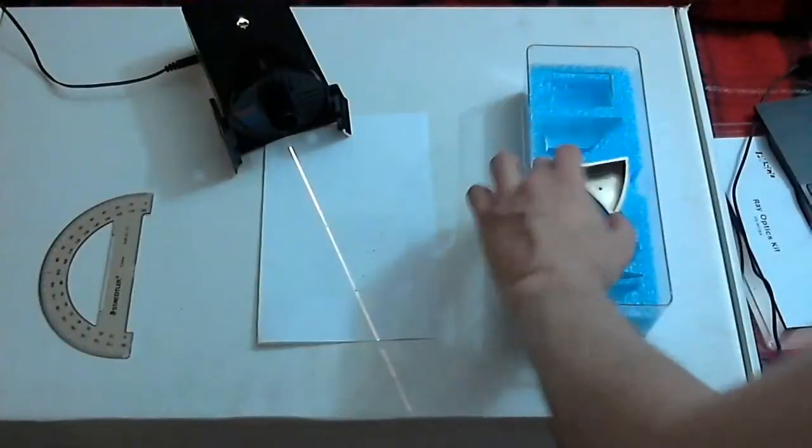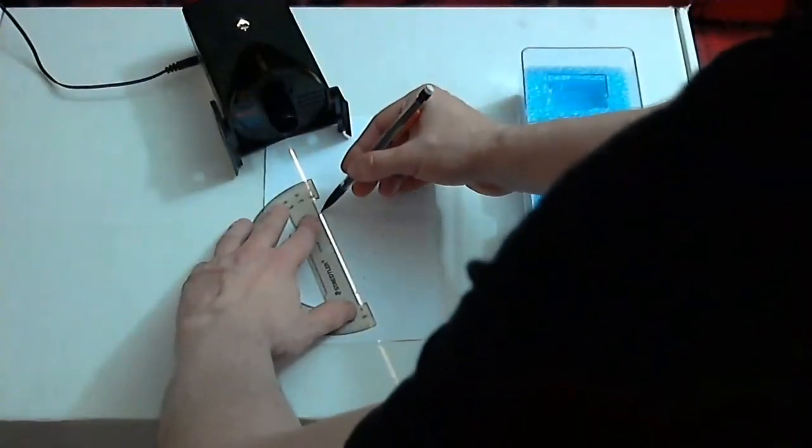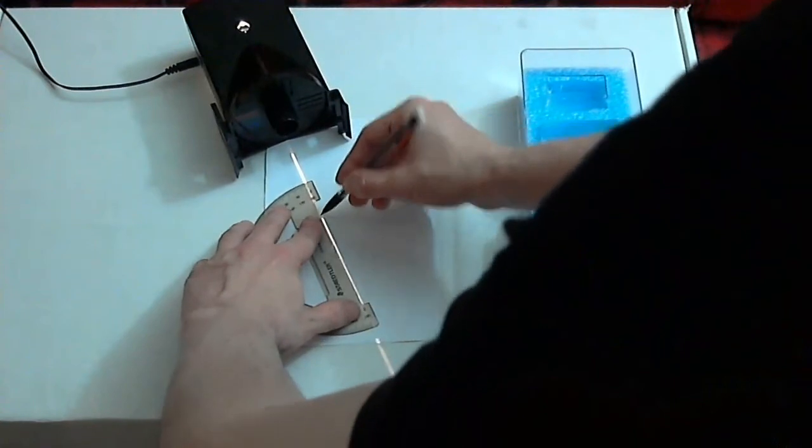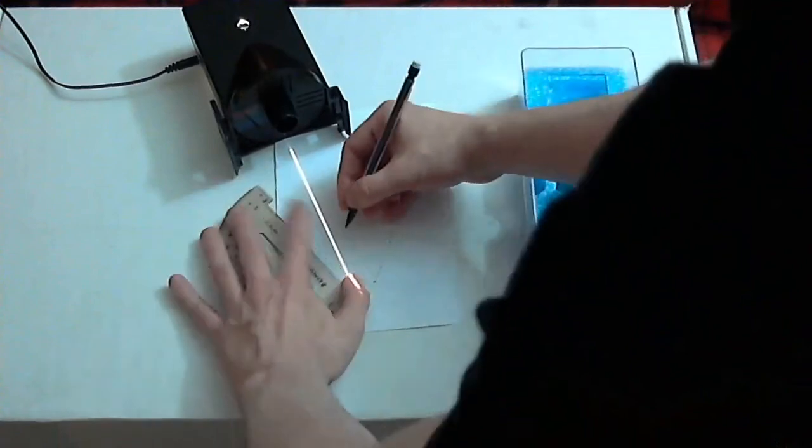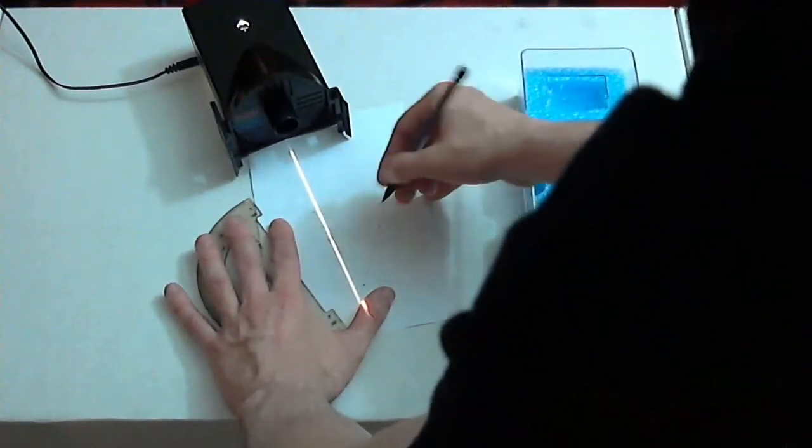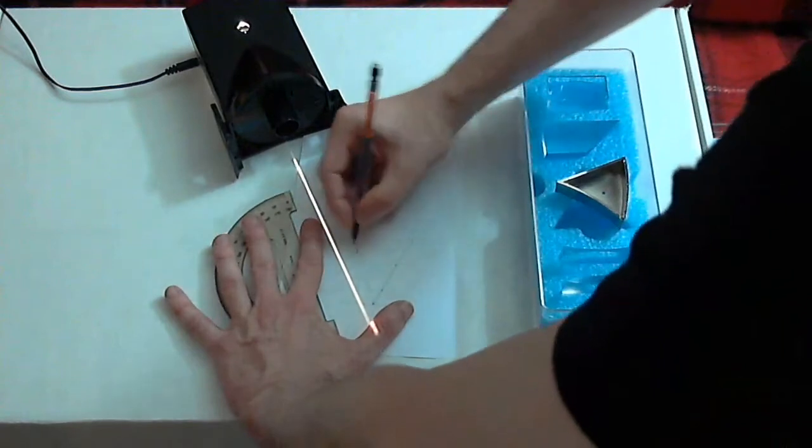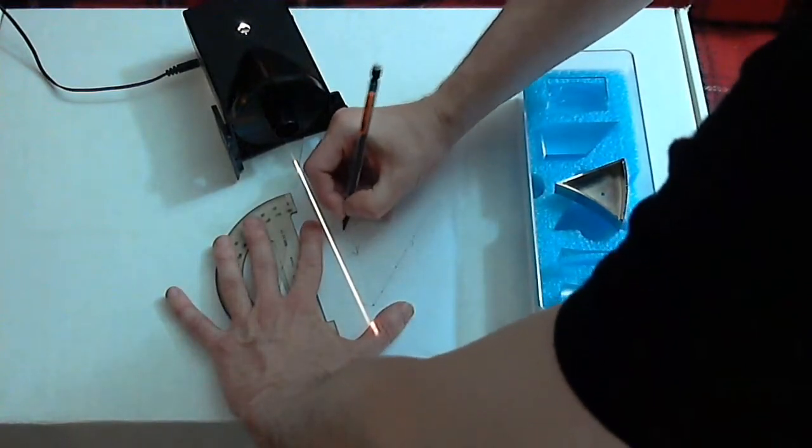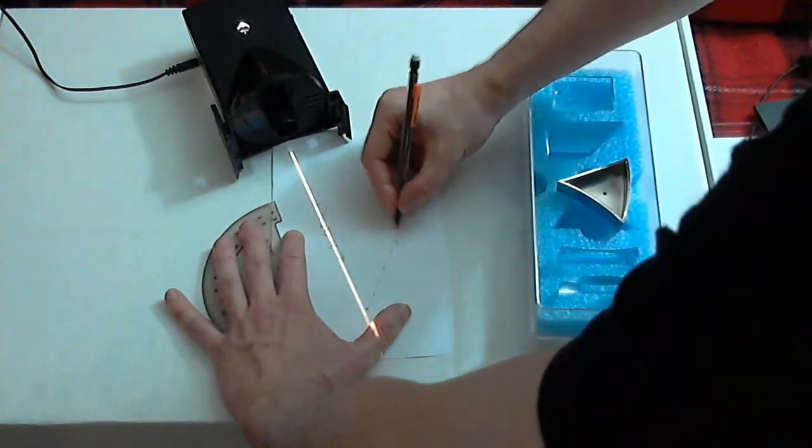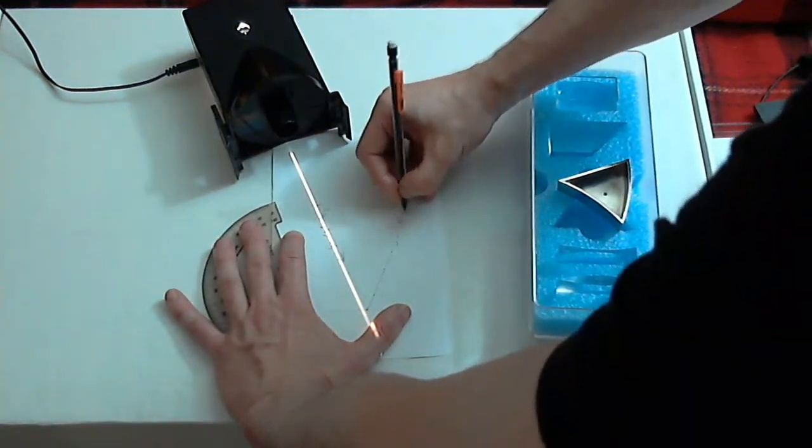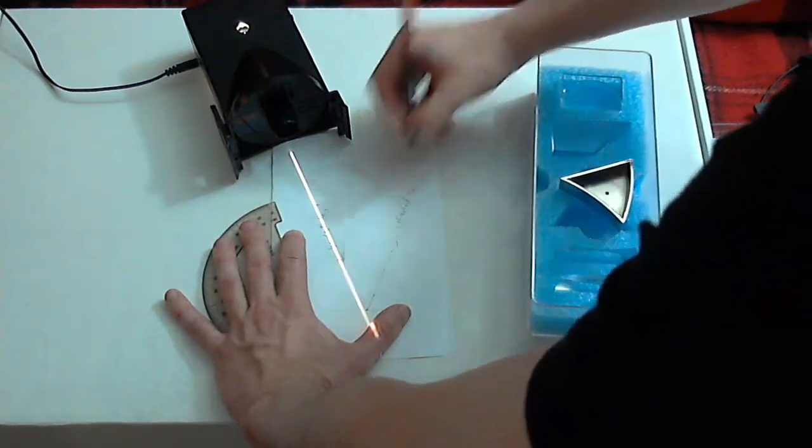Put the mirror to the side. Then you can finish the job using a ruler, connecting those dots. Don't forget to do proper labels for incident ray one and reflected ray one.